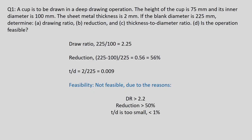With this, we complete the deep drawing chapter. Let us solve a few important problems. Problem 1: A cup is to be drawn in a deep drawing operation. Cup height = 75 mm, inner diameter = 100 mm, sheet thickness T_naught = 2 mm, blank diameter D_naught = 225 mm. Calculate drawing ratio, reduction, thickness-to-diameter ratio, and assess feasibility.